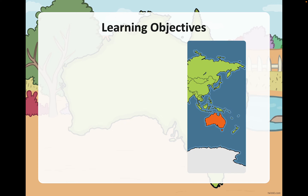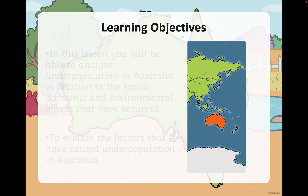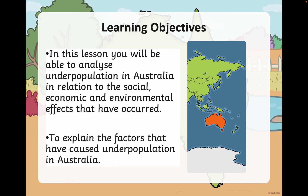The learning objectives of this revision session are to analyse underpopulation in Australia, specifically related to the different social, economic, and environmental effects that have occurred.